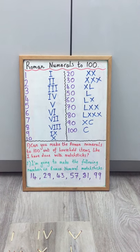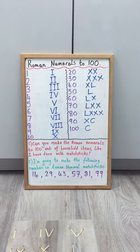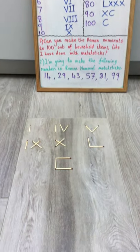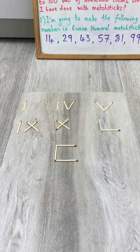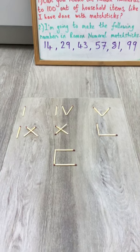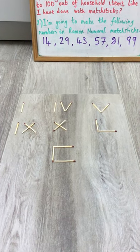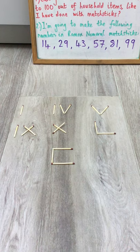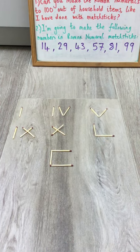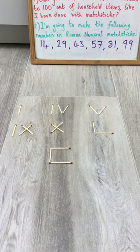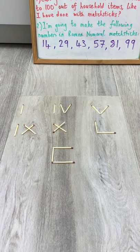So let's have a look at the numbers that I've made from my matchsticks. Okay so you can see top left first one very simple I've just made the number one from Roman numerals. In the middle at the top I've made number four IV and top right I've made number five V.